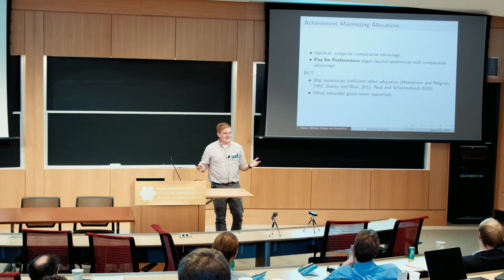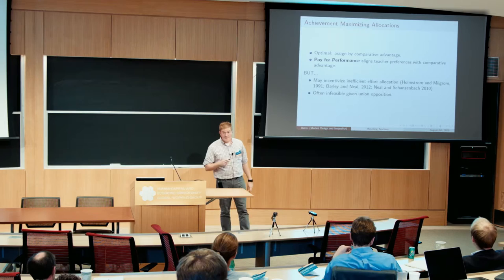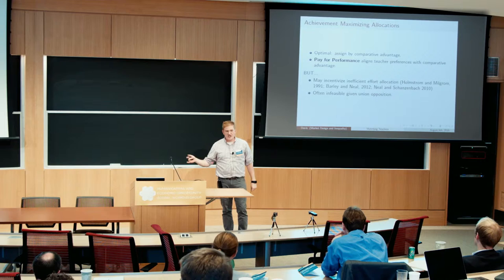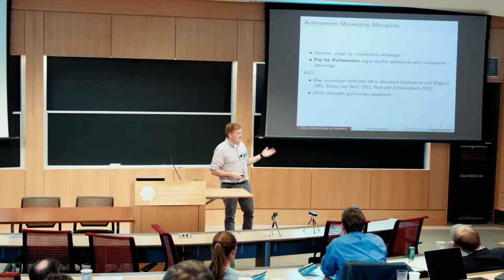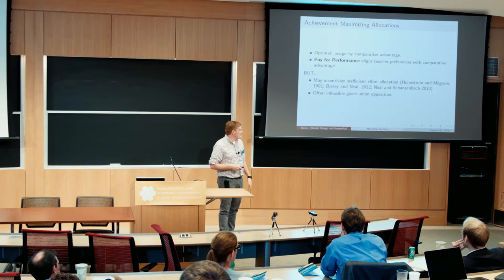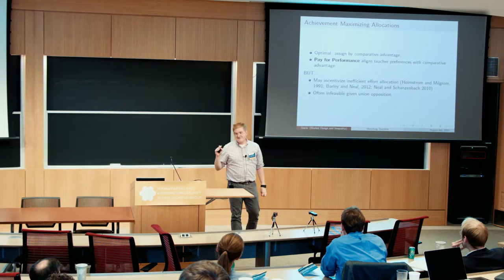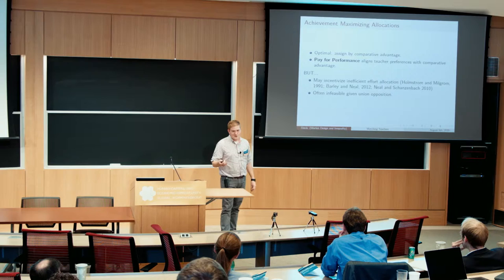The optimal thing, if we want to maximize overall student achievement, would be to assign based on comparative advantage. Pay-for-performance policies are perhaps the original form of market design in teacher labor markets — I defer to Derek who's done substantial work on this. There's a lot of potential for pay-for-performance to improve allocation by aligning teachers' incentives with their comparative advantage. The risks include incentivizing inefficient allocations of effort if teachers are only evaluated on test scores, and these policies are ferociously fought by teachers unions, as seen in Chicago's strike a few years ago.